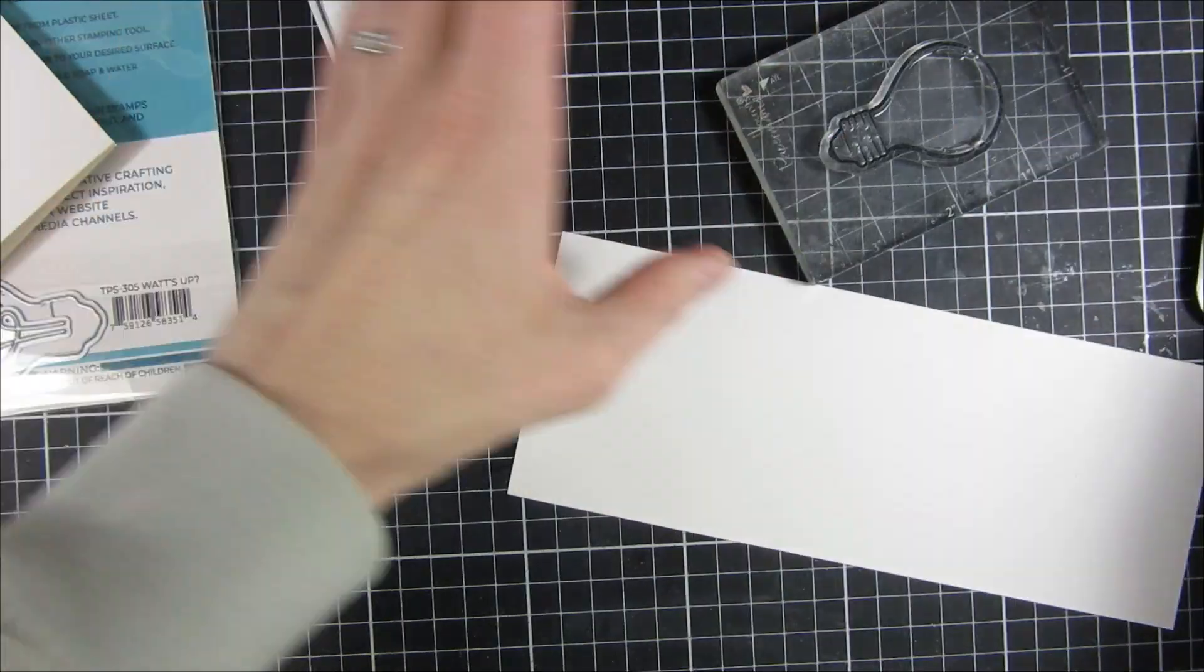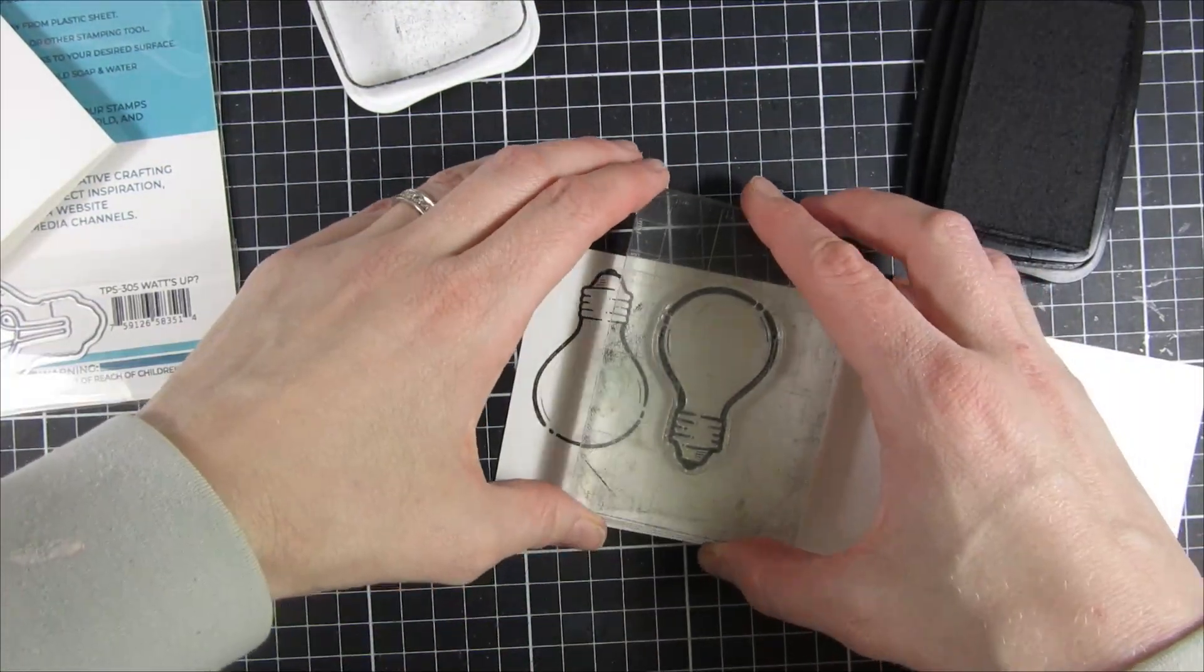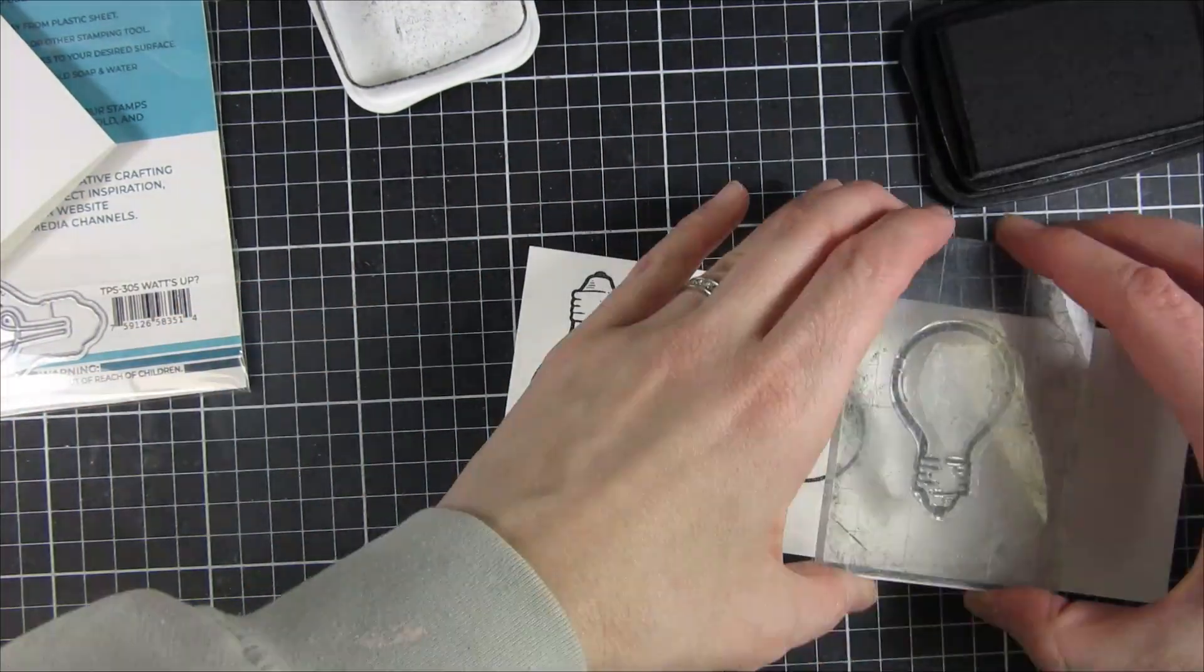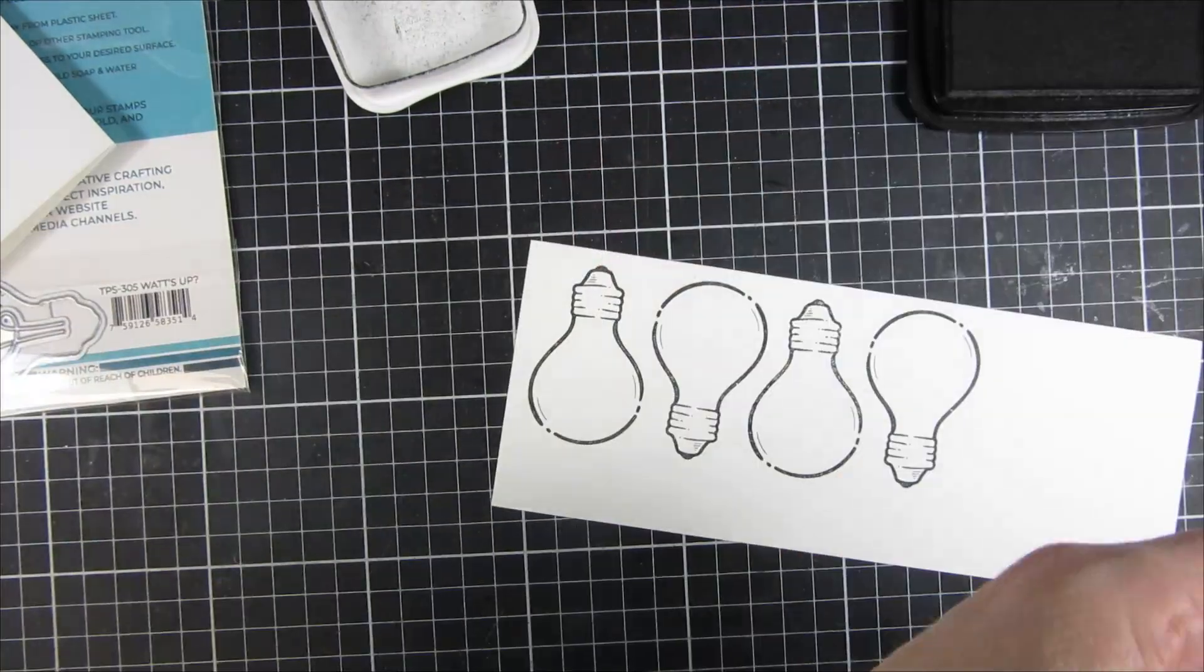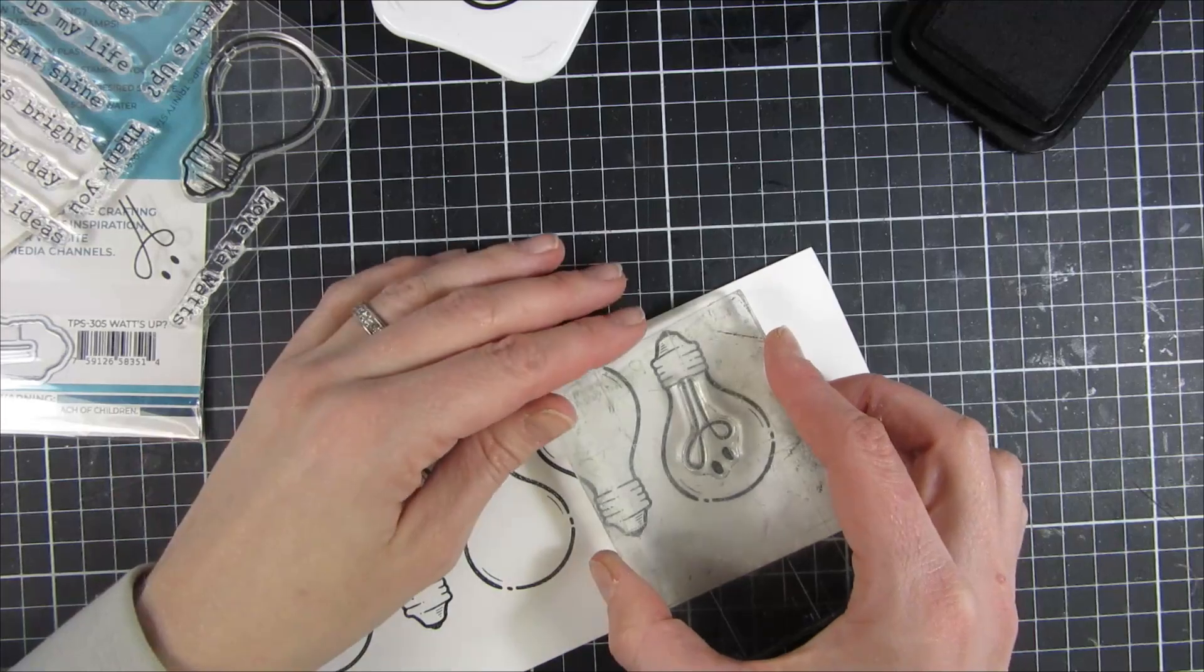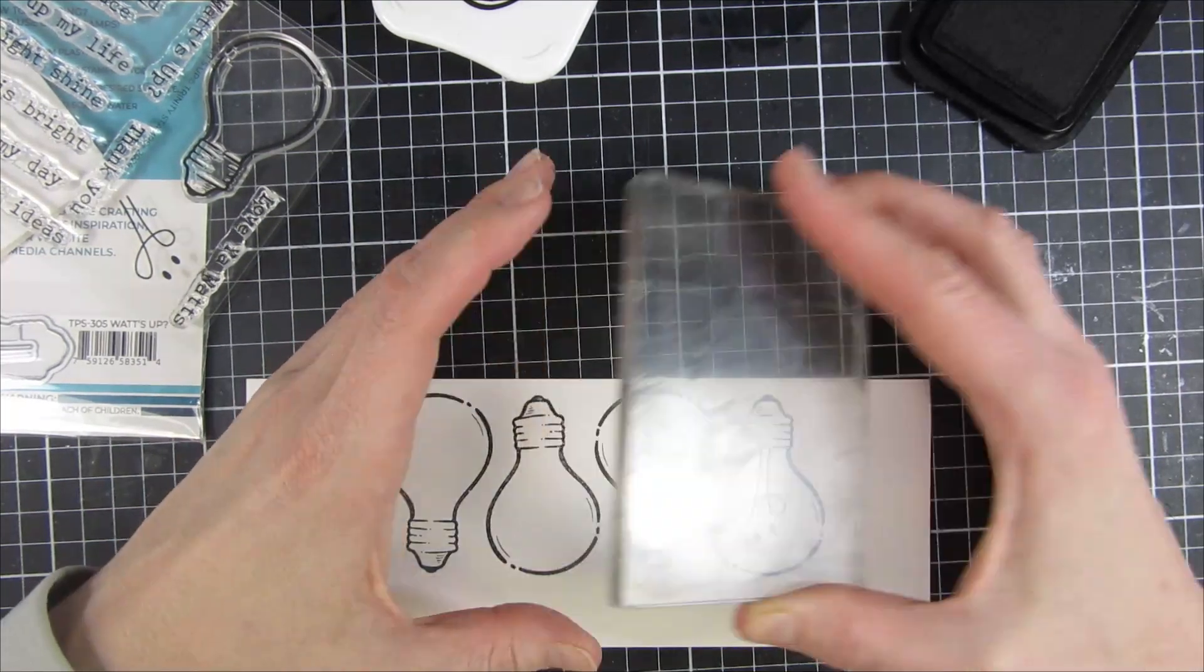And then we'll move on to our second card. For this one, I'm using the light bulbs in the What's Up stamp set, and it's a really fun one as well. This is also the stamp set that the sentiment came from, and you have this smiley face, so I will use that as well.